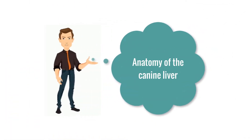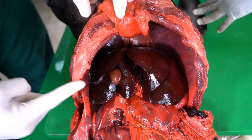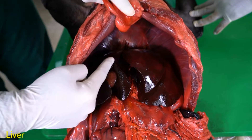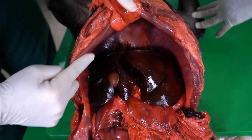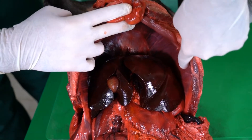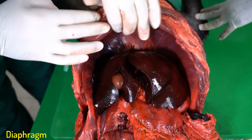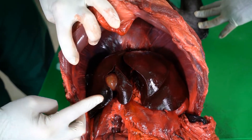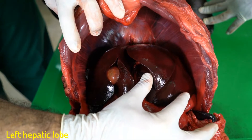Hello everyone and welcome back to another anatomy tutorial where we are going to be talking about the anatomy of the canine liver. The liver in the dog is located inside the intrathoracic part of the abdominal cavity, caudal to the diaphragm. The liver is divided into four hepatic lobes.